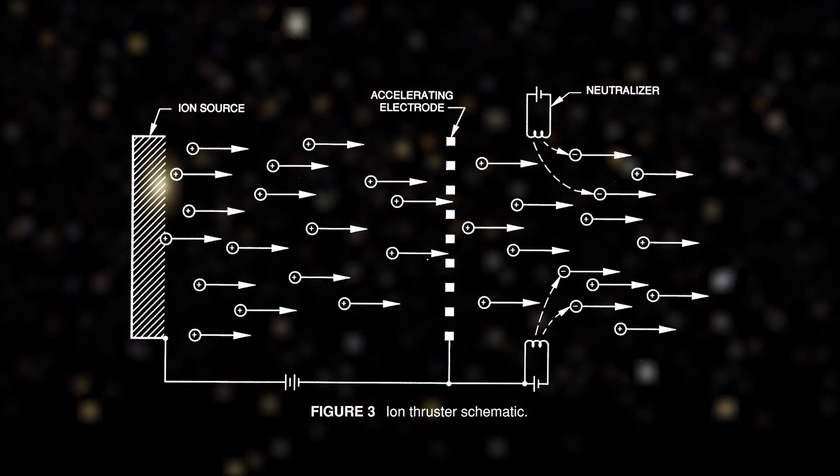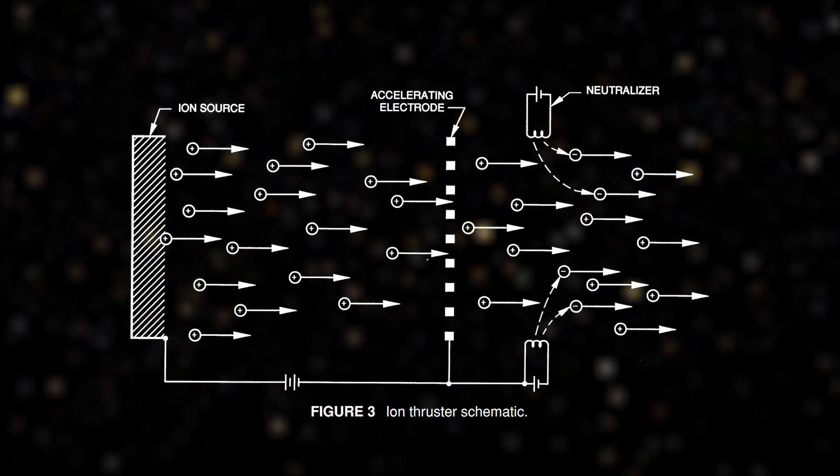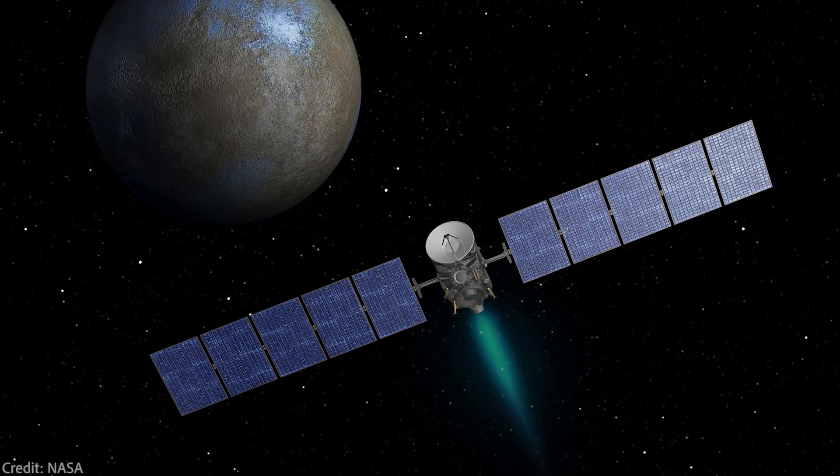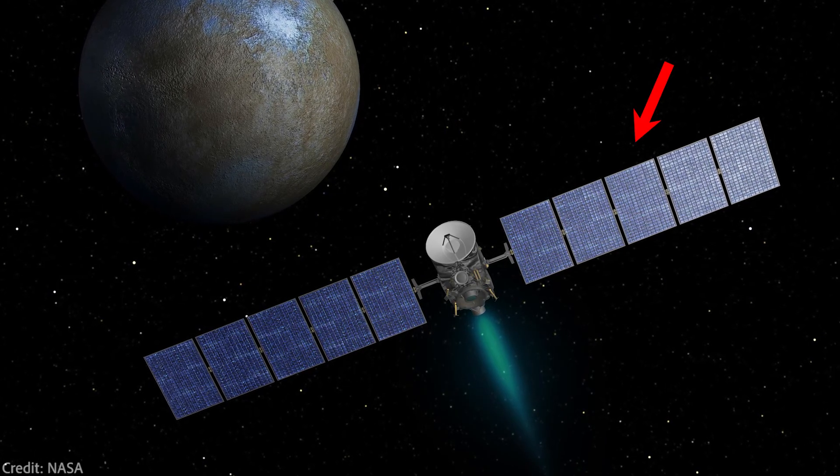We ionize the gas, accelerate ions with electrostatic forces, and then neutralize the stream of particles. The energy source of main systems is not the fuel, but rather the sun or a small nuclear reactor.